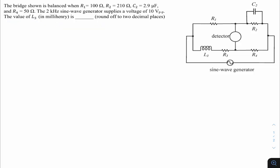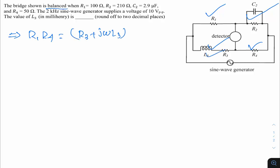Since the bridge is in balance condition, the product of opposite impedances must be equal. Writing the balance equation: R1 × R4 = (R3 + jωL3) × (R2 in parallel with C2). The impedance of R and C in parallel is R / (1 + jωRC), where here it is R2, C2.